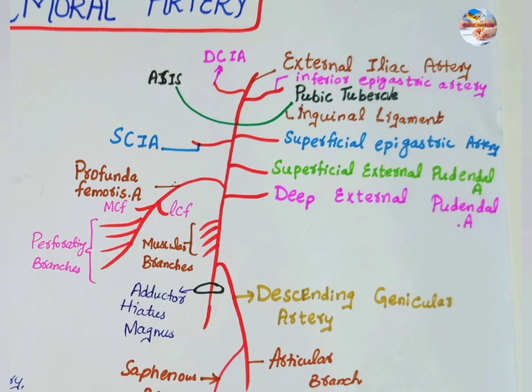At the lower end of the adductor canal, at the junction of the middle and lower thirds of the thigh, it passes through an opening in the adductor magnus to become continuous with the popliteal artery.